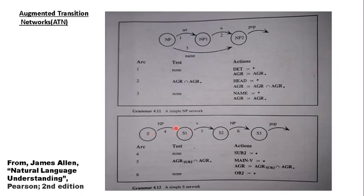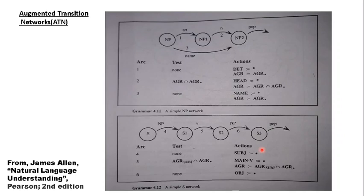In an augmented transition network, if we choose to take an arc, we can't blindly follow it. First, we must pass the test condition for that arc. For arc 4, the test condition is none, so we can take it. Additionally, when the arc is complete and we move from S to S1, there are actions related to features and feature values that must be performed — that is the extra element in ATNs.